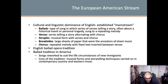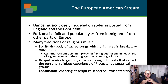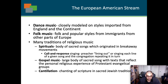Dance music was closely modeled on styles imported from England and the continent. Country dances like square dancing, waltzes, schottisches, ballroom polkas, and the like are all part of this dance music stream. Folk music was popularized by immigrants coming to North America from different parts of Europe — Irish folk music especially flourished as people fleeing the Potato Famine of the 1840s came from Ireland and Germany, bringing their music, cultural, and historical backgrounds with them.